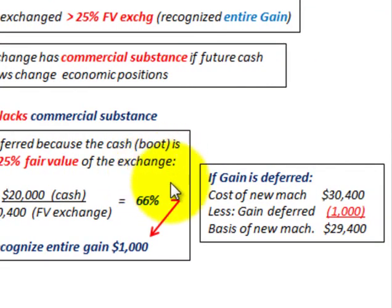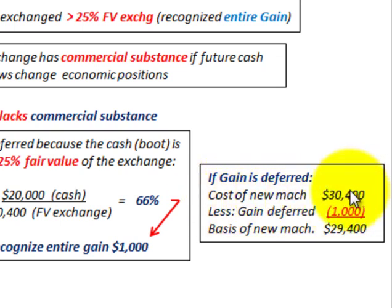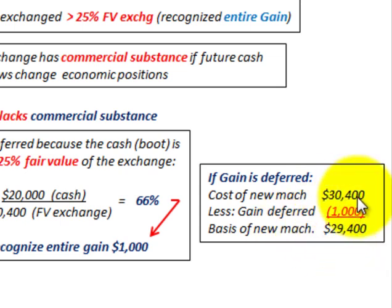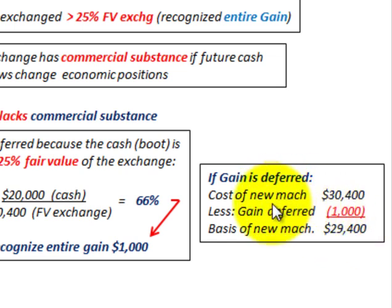Let's briefly look at the situation where the gain is deferred. If we had deferred the gain, the cost of the new machine — $30,400 — would have the deferred gain of $1,000 subtracted out. That gives us the basis of the new machine at $29,400. This is just to illustrate how we'd handle a deferred gain, without going through the full journal entries.